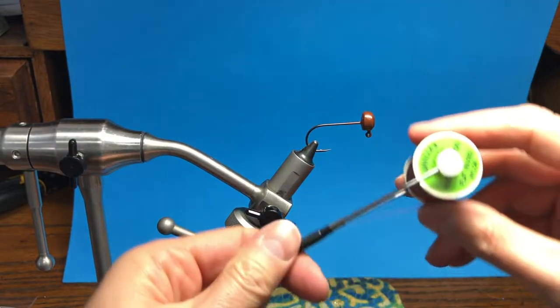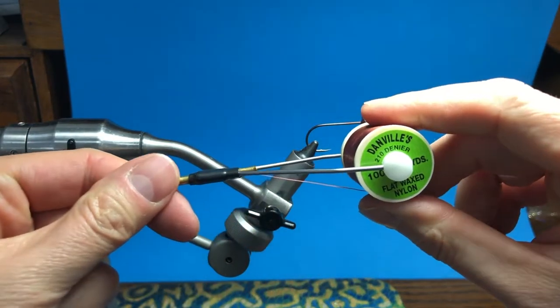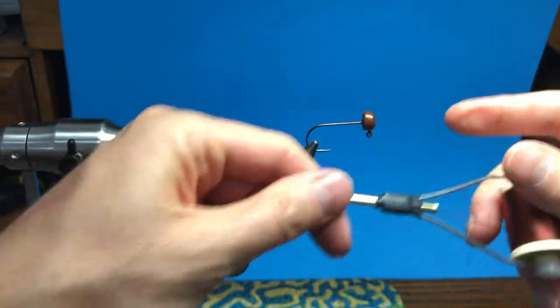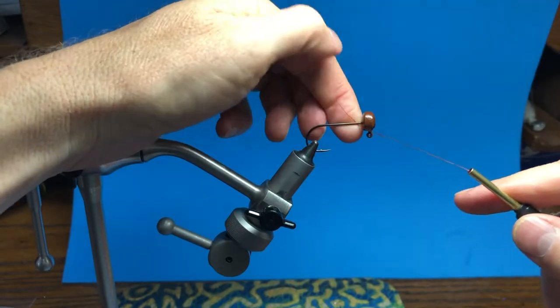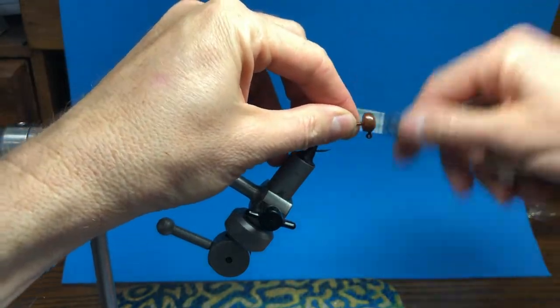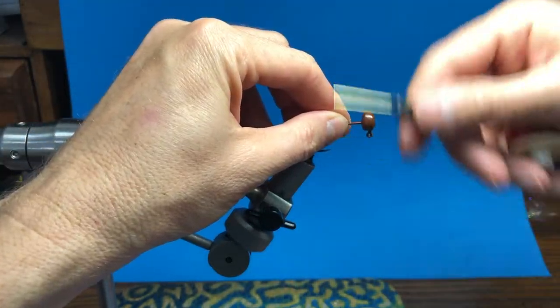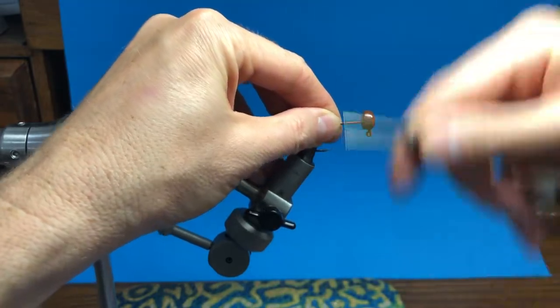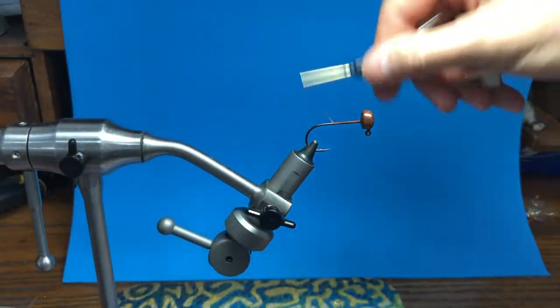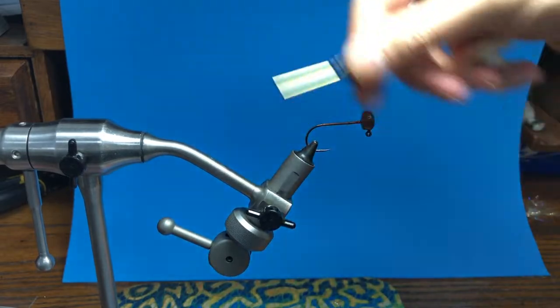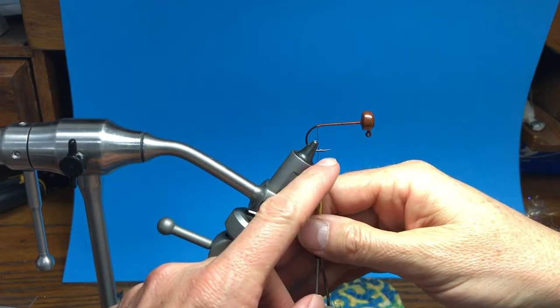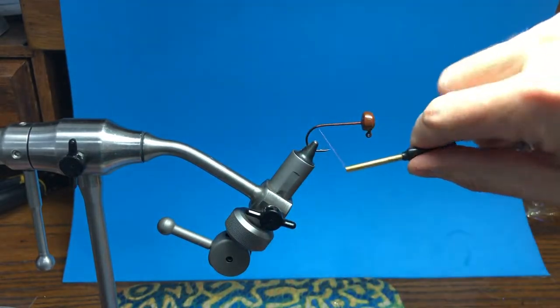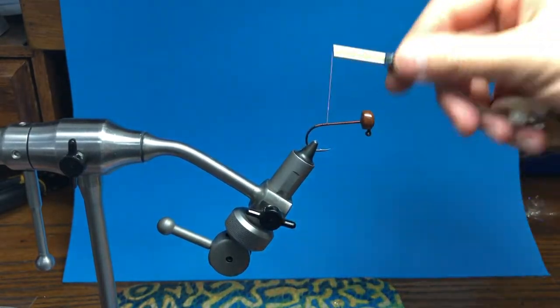Like just about every bug, this is tied on with Danville's 210 denier thread. We're going to wrap the thread all along the hook shank to keep those materials from spinning. We're gonna go all the way down to the bend just past the barb and bring it back almost to the hook point.